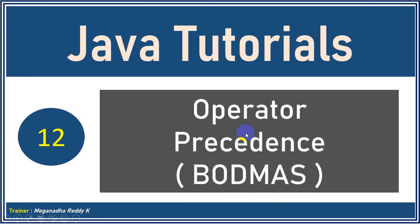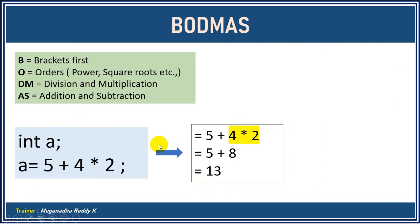Let's go to the next slide and understand this in detail. First importance will be given to brackets. If you have brackets, they are evaluated first. Then orders, like power and square root. Then division and multiplication. The least importance is given to addition and subtraction.